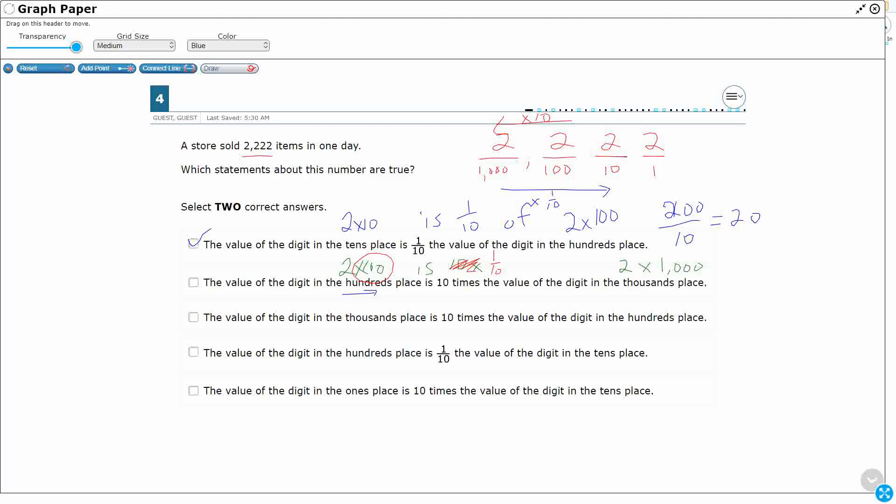Let's check option C, the value of the digit in the 1000s, 2 times 1000 is 10 times the value of the digit in the hundreds. Yep. 10 times 2 times 100. Yep. Because as you're going from the hundreds over here, you are getting 10 bigger. So that is another answer right there.